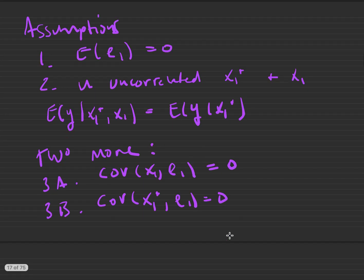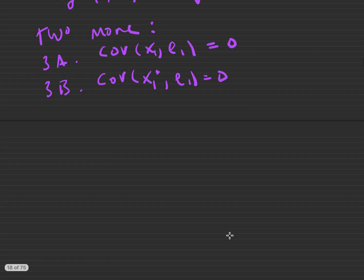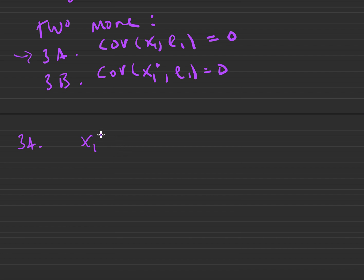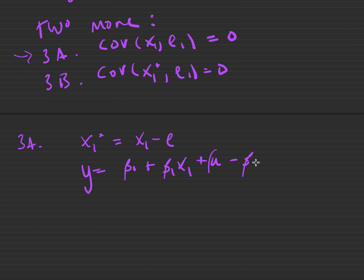Under 3b, this will imply that the error is correlated with the observed measure. Let's focus on the case under 3a first. If the error is uncorrelated with the observed measure, the error is likely correlated with the unobserved measure. So let's write x1 star equals x1 minus e1 and plug this into the population regression function, so that we have y equals beta naught plus beta 1 x1 plus u minus beta 1 times e1.